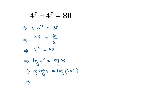So the left side is x log 4 is equal to, applying the formula log(a times b) equals log a plus log b, we can write log of 4 times 10 as log 4 plus log 10.